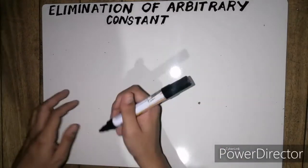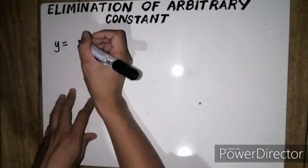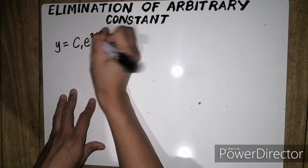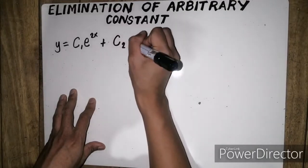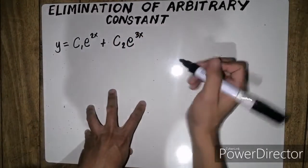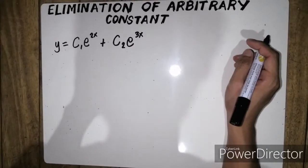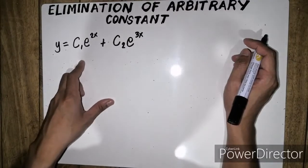Let us say that the given is y equals c1e to the 2x plus c2e to the 3x. Sa pag-eliminate ng arbitrary constant, always remember na tignan ninyo kung ilan yung arbitrary constant ninyo.